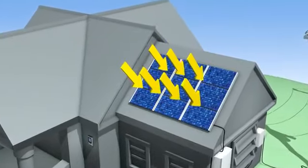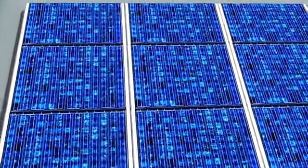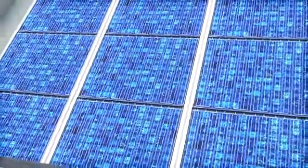When sunlight hits the modules on a solar photovoltaic, or PV, installation, the modules convert the sun's energy into electricity that can be used to power your home.